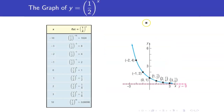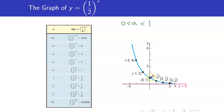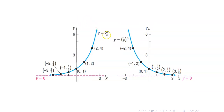What about if a is between 0 and 1? As an example, let us consider y equals 1 half raised to x. As x becomes bigger and bigger, notice that 1 half raised to x becomes closer and closer to 0, so it will have a horizontal asymptote at y equals 0. And as x becomes more and more negative, the value of 1 half raised to x becomes bigger and bigger. If you compare the graphs of y equals 2^x and y equals 1 half raised to x, observe that they are just reflections of each other along the y-axis.